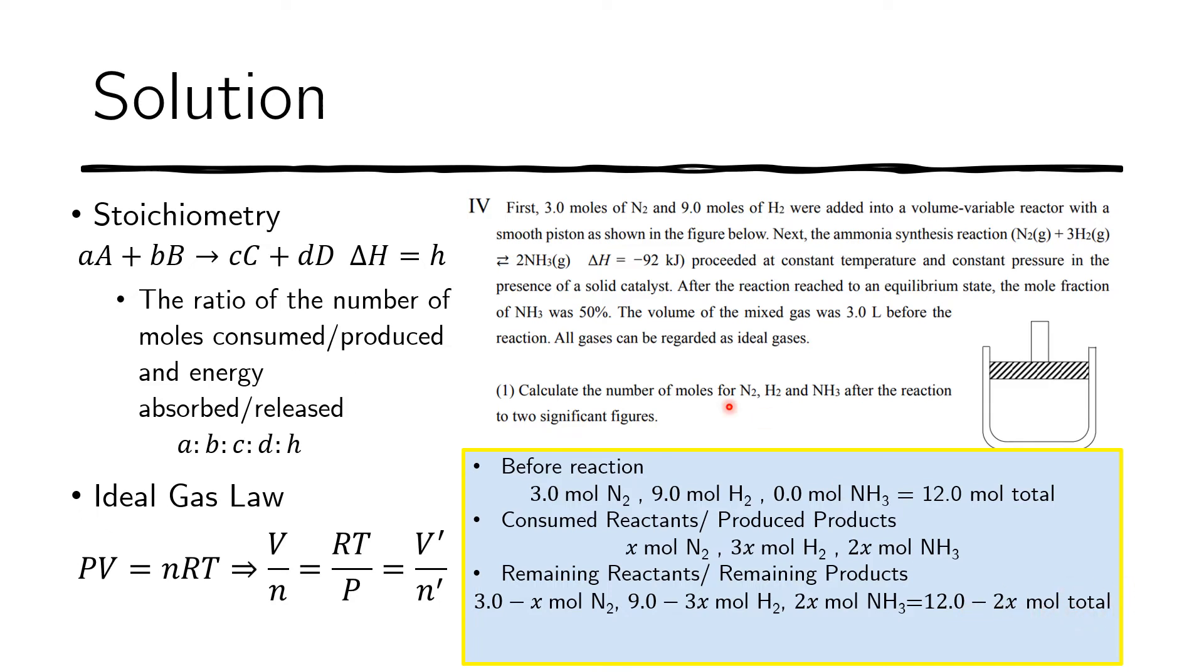We did that because we are given that the mole fraction of ammonia is 50%. So 50% is one-half. We know that the mole fraction is the total number of moles of ammonia divided by the total remaining moles of the ideal gas. The remaining moles of ammonia is 2x, and the total remaining moles is 12 minus 2x. So we get this equation: one-half equals 2x over 12 minus 2x. Now we solve for x, and that will tell us how much nitrogen was consumed.